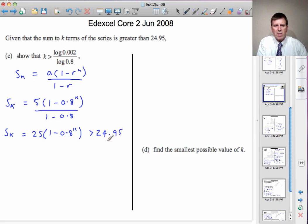So what I'm going to do now is divide this inequality through by the 25. So on the left-hand side, I'll just have 1 minus 0.8 to the power k.